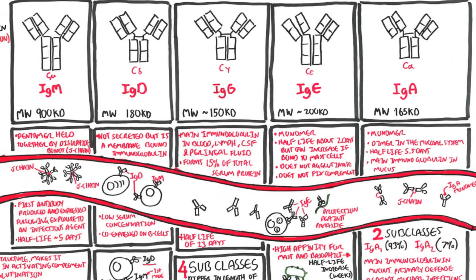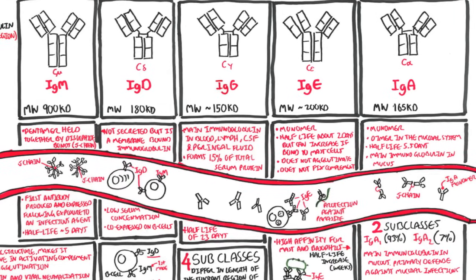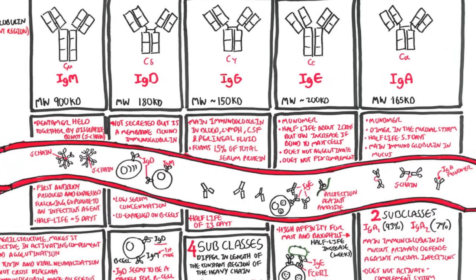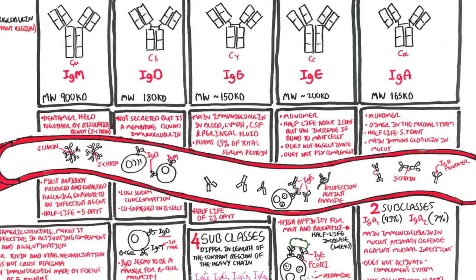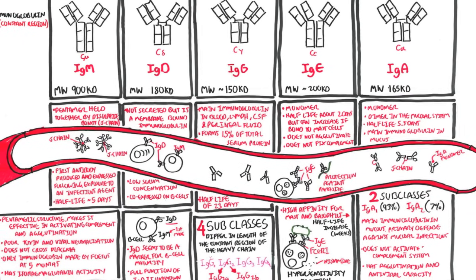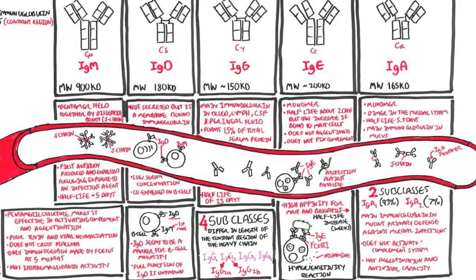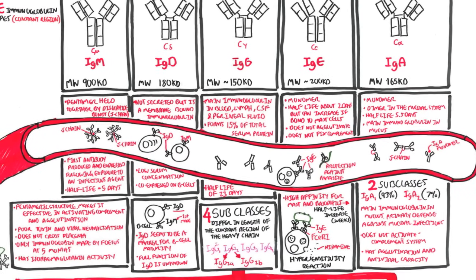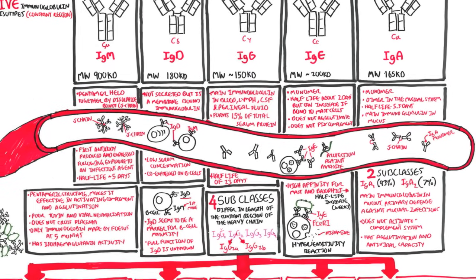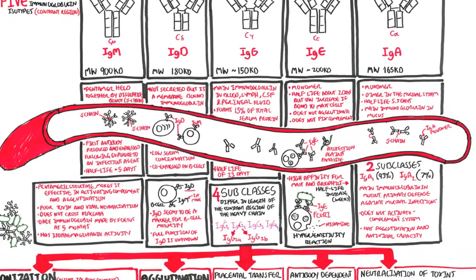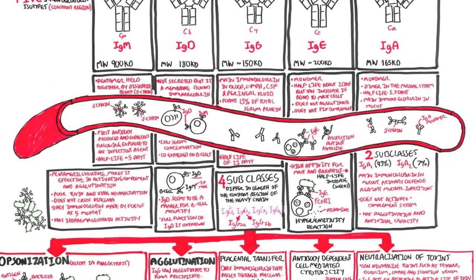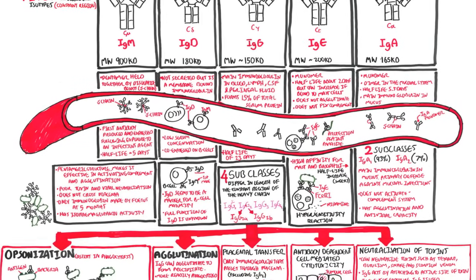So that concludes the video on immunoglobulins. As a summary, IgM is the first antibody to be expressed, produced. IgD is a membrane-bound antibody. IgG is the most abundant antibody in the blood and does the most things in the body, in terms of protection. IgE stimulates the hypersensitivity reaction, allergic reaction. And IgA is the most abundant immunoglobulin in the mucosal system. Thank you very much for watching. I hope you enjoyed it.